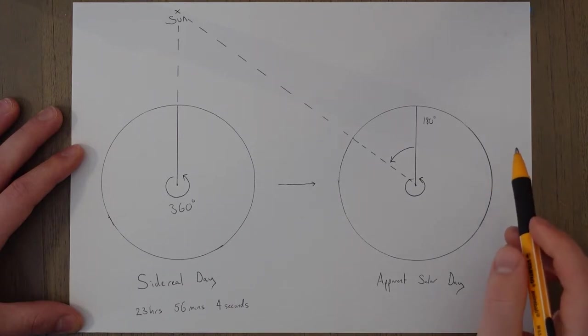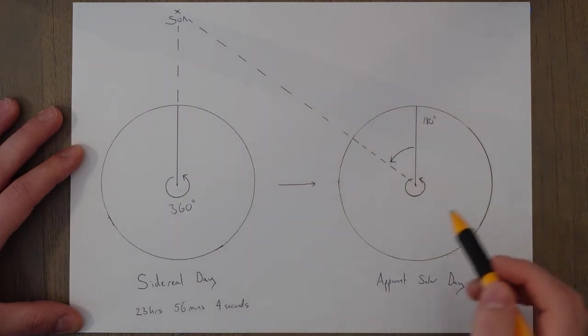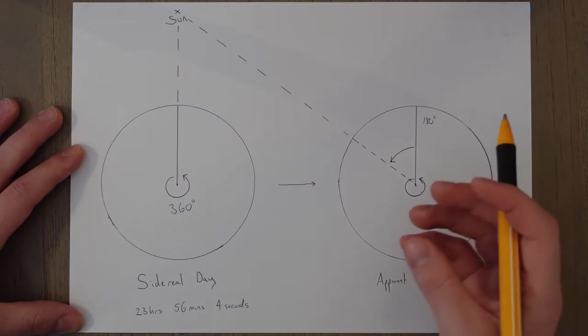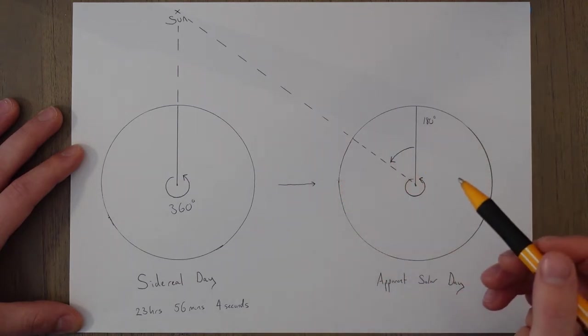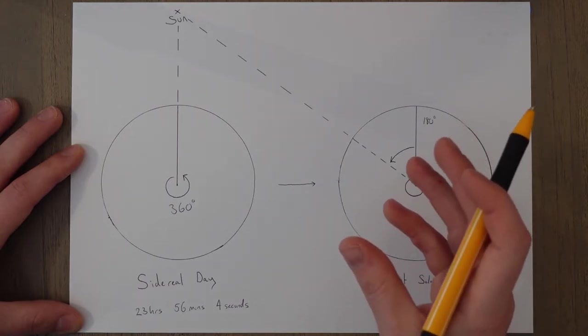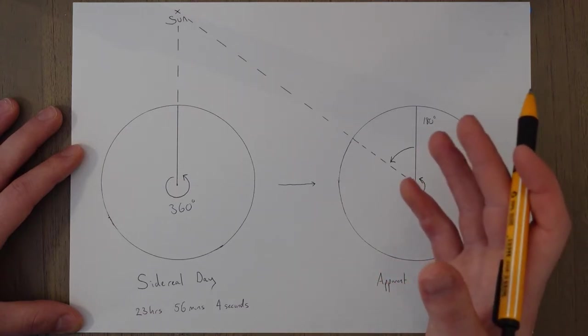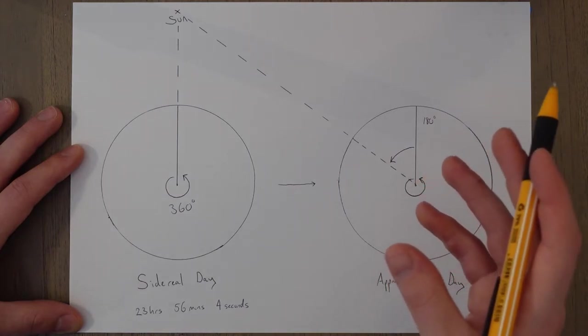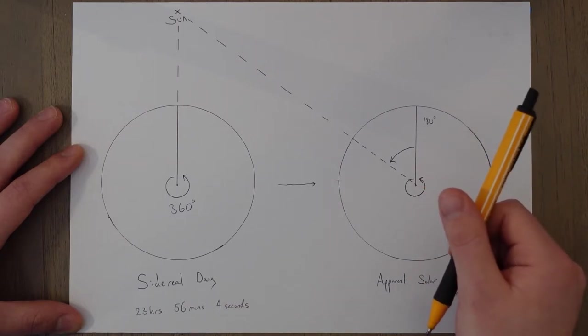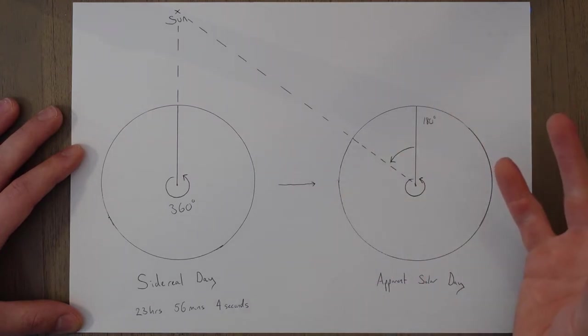The amount that the apparent solar day is longer than will vary throughout the year because the Earth's orbit is an elliptical pattern. So at the perihelion, the point where we are closest to the sun, the Earth is moving faster, so the apparent solar day would be longer. And at the aphelion, the point where we're furthest from the sun, we're moving through space slower and the difference wouldn't be as large. If we then add in the fact that the Earth's rotational axis is slightly tilted, it makes the whole picture again a little bit more complicated.